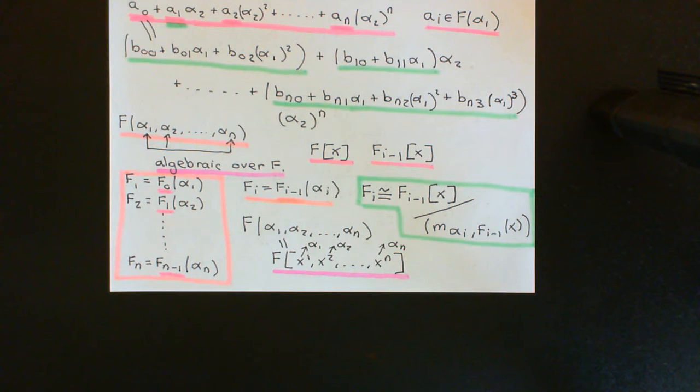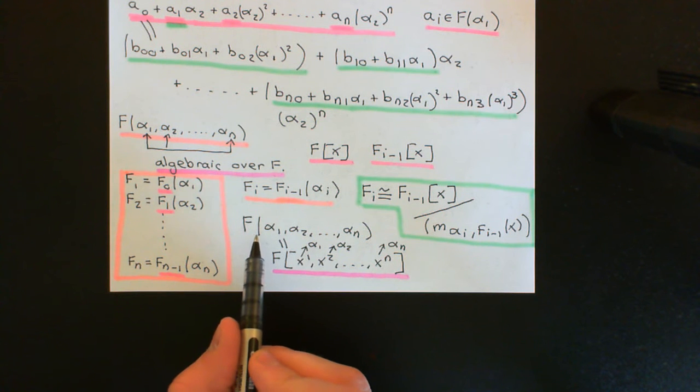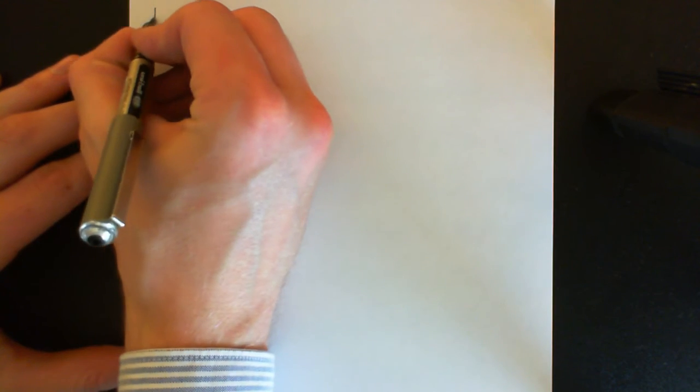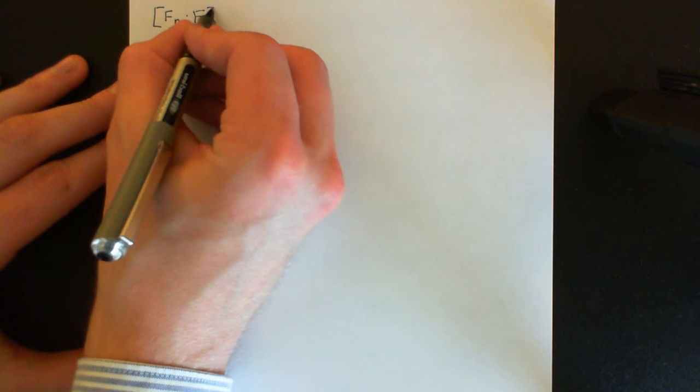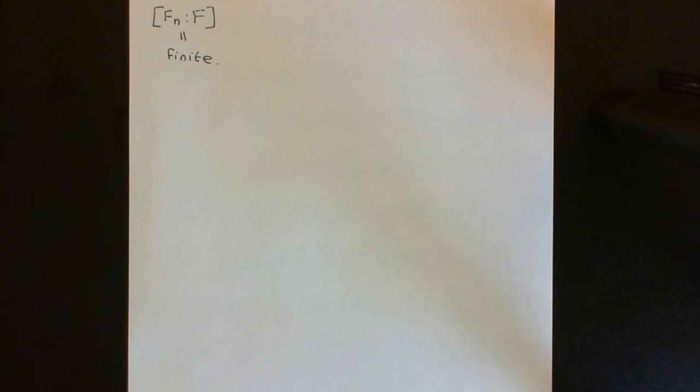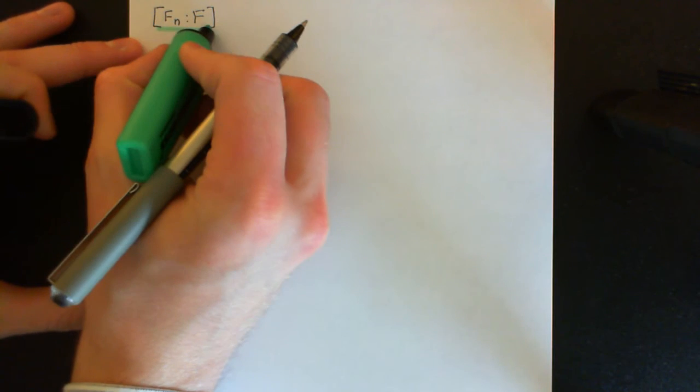One more thing to say for this video: we can conclude that the degree of a finitely generated field extension — when the generating elements are algebraic — over the initial field F is going to be finite. We've ruled out any of the elements being transcendental over F, so we're supposing that α₁, α₂, all the way up to αₙ are algebraic over F. To see why the degree is finite, I'll use a generalization of the Tower Law.